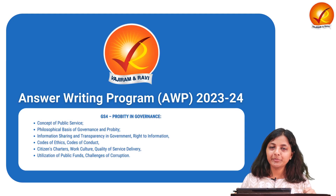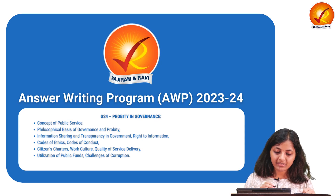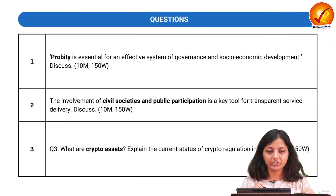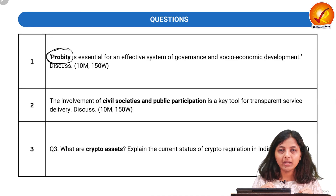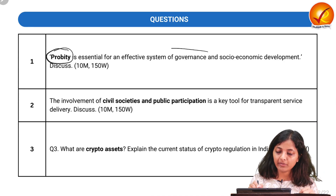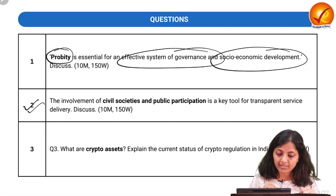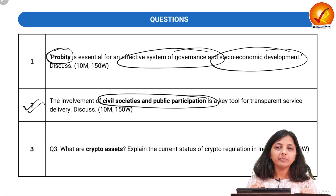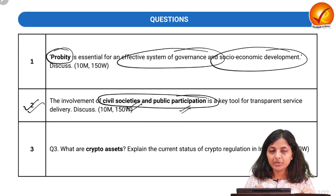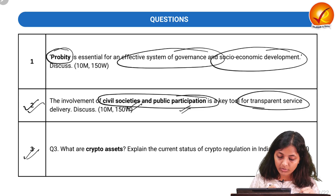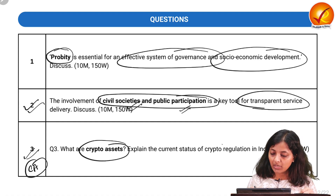Hello students, welcome to the answer writing program. Today we will be discussing two questions from GS4 - propriety and governance - and one question from current affairs. The first question is related to propriety and why it is an essential part for effective governance and socio-economic development. The second is related to the involvement of civil societies and public participation and its role in transparency of service delivery.